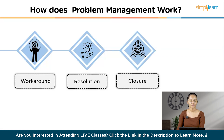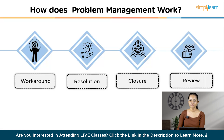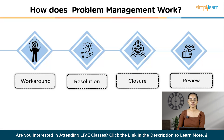Seventh, Problem Closure: after successfully implementing the solution, the problem record is closed and all relevant documentation is updated to reflect the solution and steps taken. Then, Review: the final step is a review of the entire process to identify lessons learned or areas for improvement, which helps refine problem management practices for future issues.